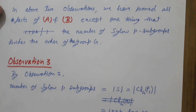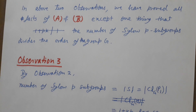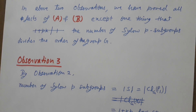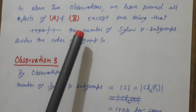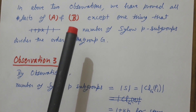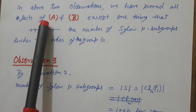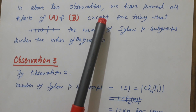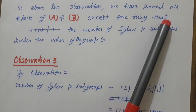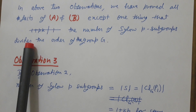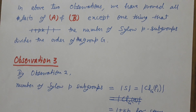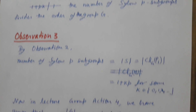So in these two observations we have proved all the facts needed for Sylow's second and third theorems, except one: that the number of Sylow p-subgroups divides the order of G. We will prove this in observation number three.